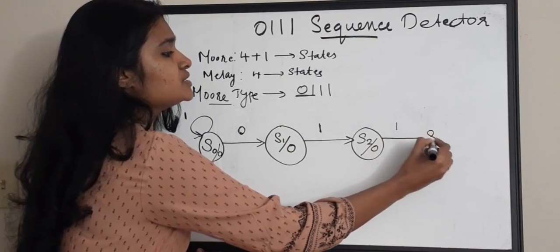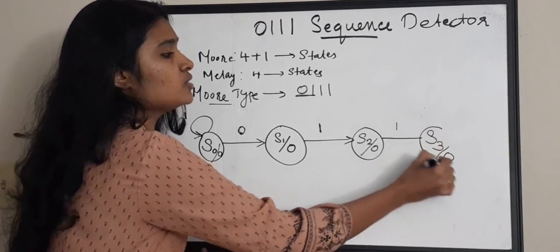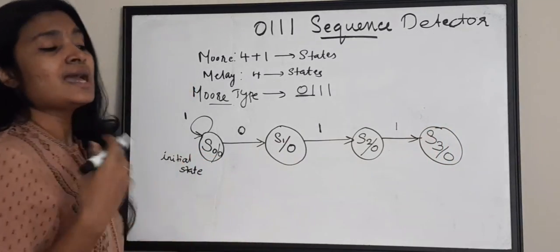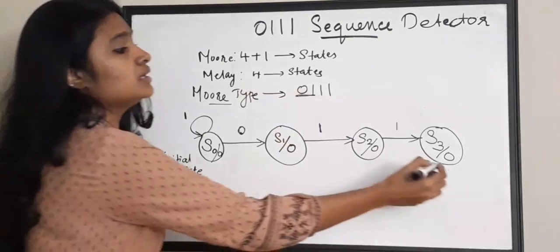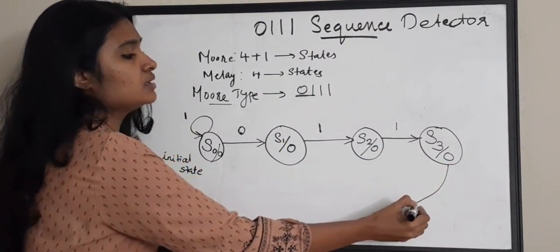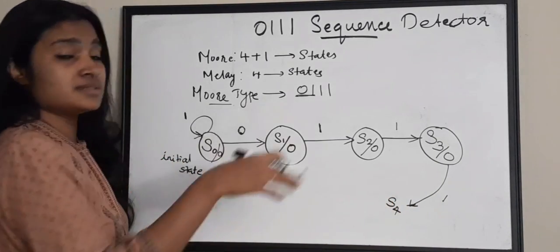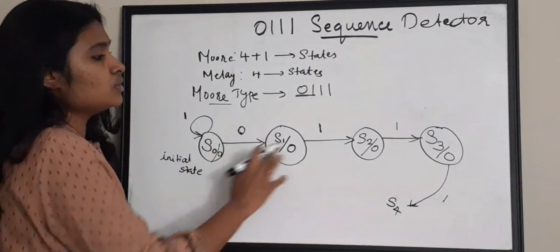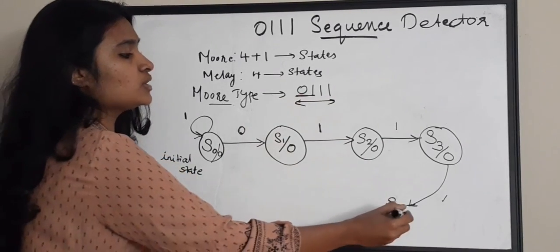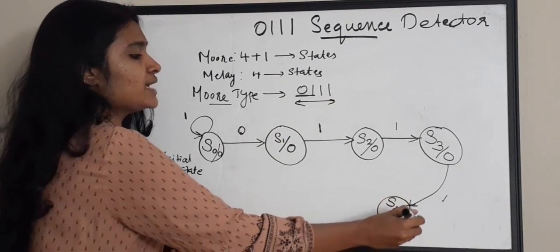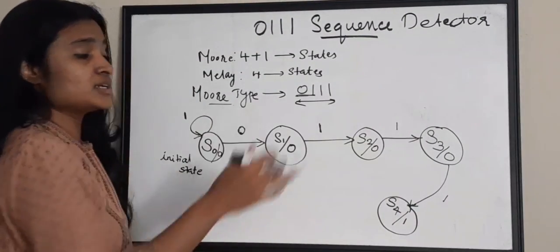When you are at S2 and you receive a 1 again, you move to S3 state, but your output is again 0 because you have not received your sequence entirely. We have now completed states 1 through 4. There is one more: when you receive a 1 at S3, you go to S4. In S4 state you have received 0 1 1 and 1 entirely, so your output is 1. We have completed the sequence detection once.